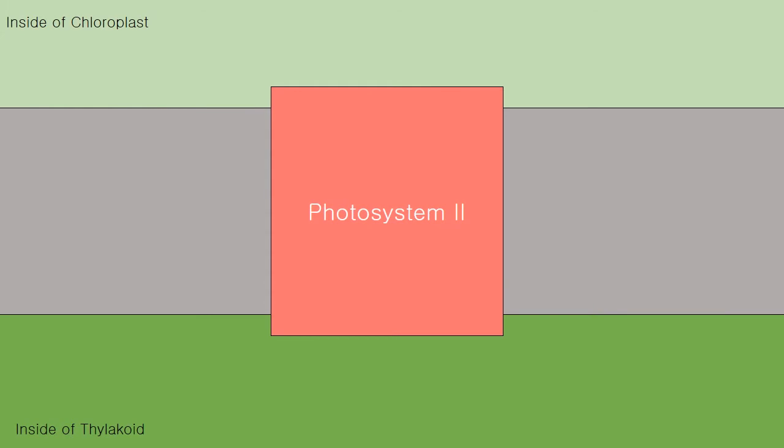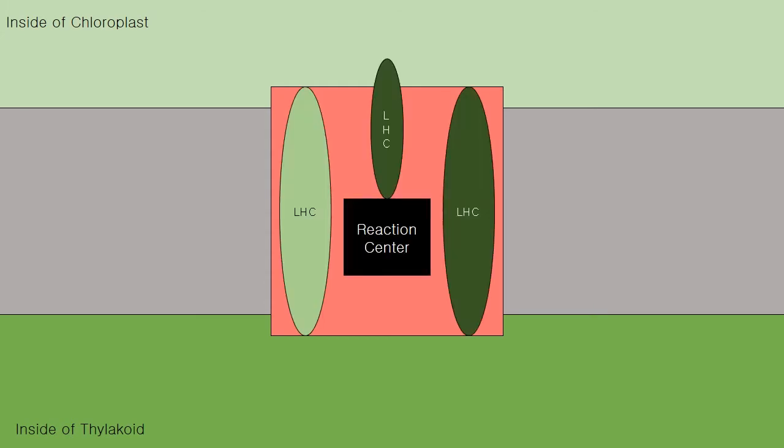Photosystem II contains light harvesting complexes and a reaction center. When other light harvesting complexes transfer energy to photosystem II, it is able to perform chemical reactions that prepare a molecule to carry electrons for the next step of photosynthesis. The electron carrier that photosystem II works on is plastoquinone.